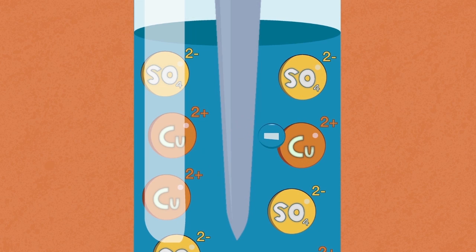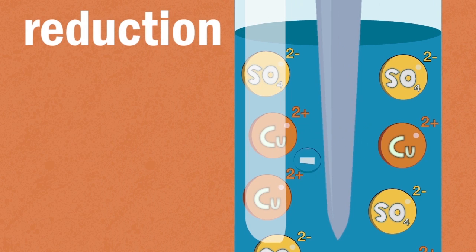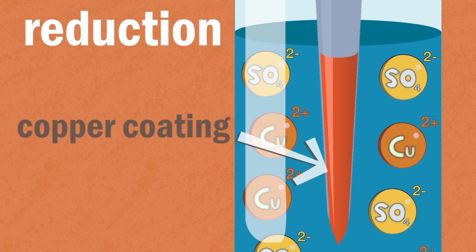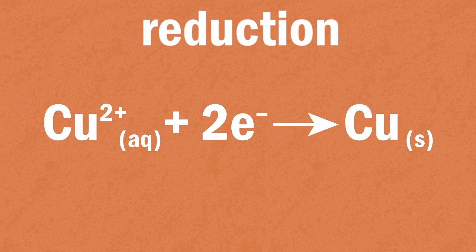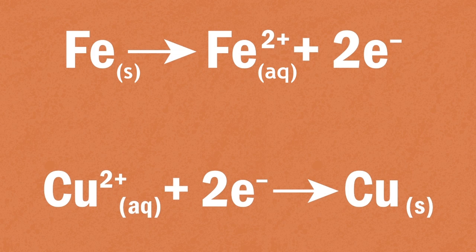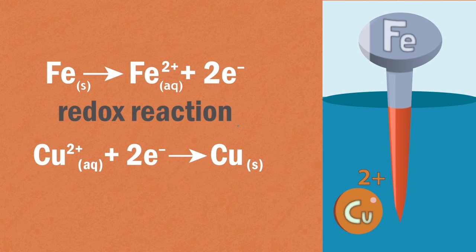The copper is less reactive, so its copper 2+ ions are forced to accept these electrons. This is called reduction. As a result, copper metal is produced and coats the nail as shown in the reaction. These two processes happen simultaneously in something called a redox reaction.